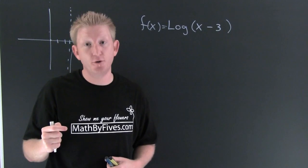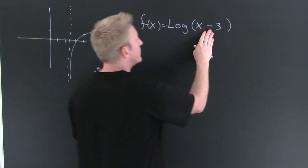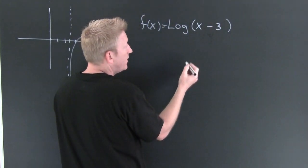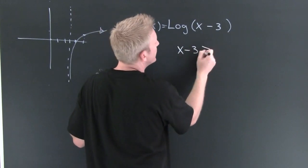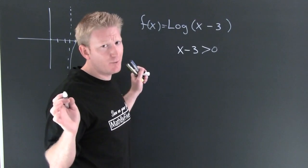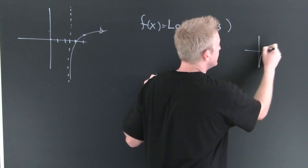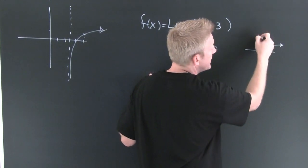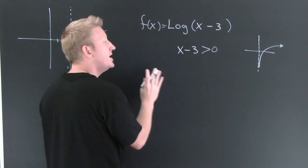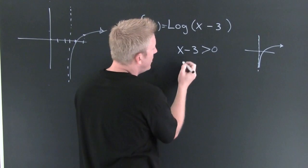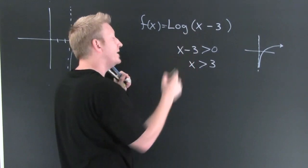So how do we find the domain of a logarithm? I need to look at the argument. In that argument, I want to ask: where is it bigger than zero? Can we include zero? No way. Because the log looks like this and it has an asymptotic action at x equals zero — I cannot include zero. So I solve: x has to be bigger than three for the domain of this.